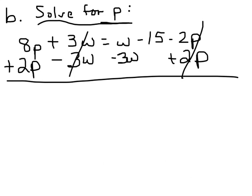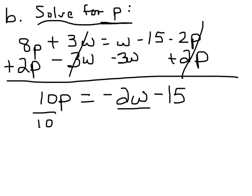Alright, let's see what I cancelled out. I cancelled out that and this. What do I have left? 8p plus 2p is 10p equals negative 3 and positive 1 is negative 2w minus 15. I still have to isolate the p, so I'm going to divide every term by 10.